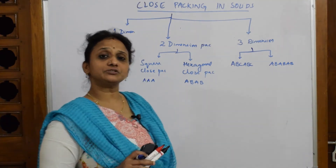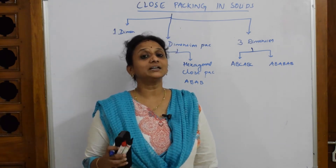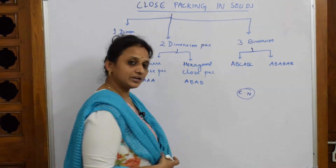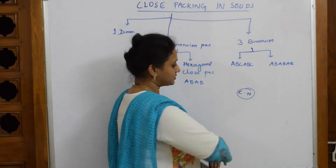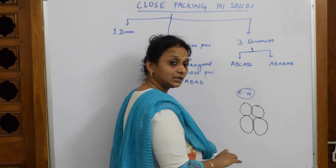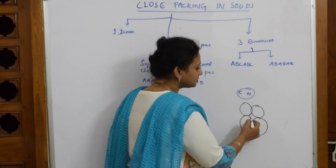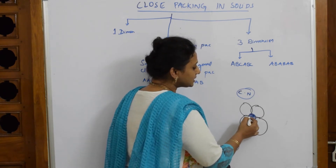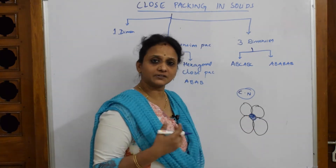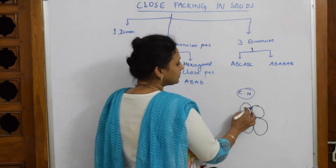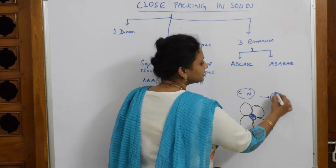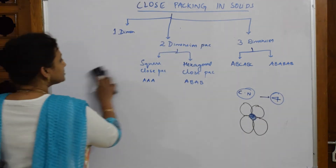Let us also remember the definition of coordination number: it is the number of nearest neighboring atoms. For example, if I have four atoms surrounding one atom in the center, that central atom is in contact with four other atoms, so the coordination number is four.